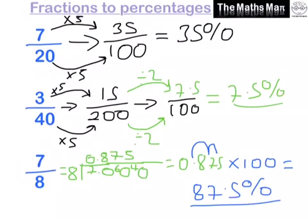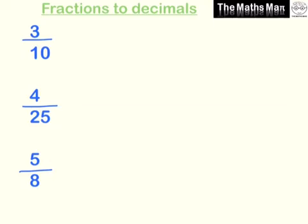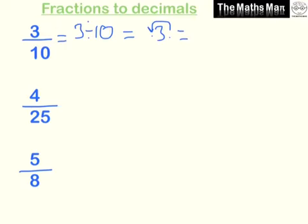Now to change fractions to decimals. For 3 over 10, this is the same as 3 divided by 10. We have the number 3, the decimal point moves back once, giving us 0.3.